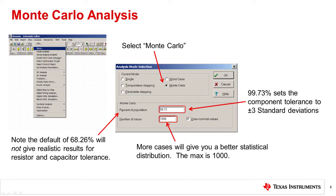After entering the percentage of population, enter the number of cases that will be run in the simulation. In this example, we run the maximum of 1,000 cases.